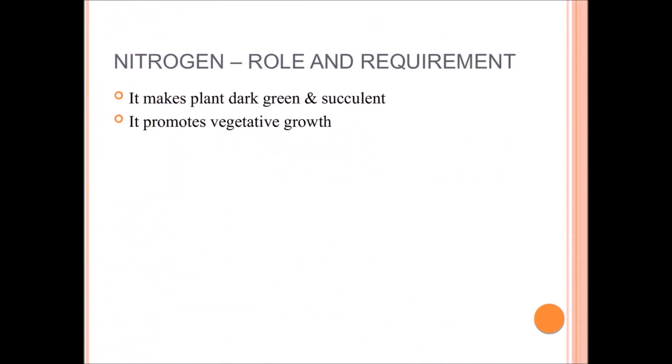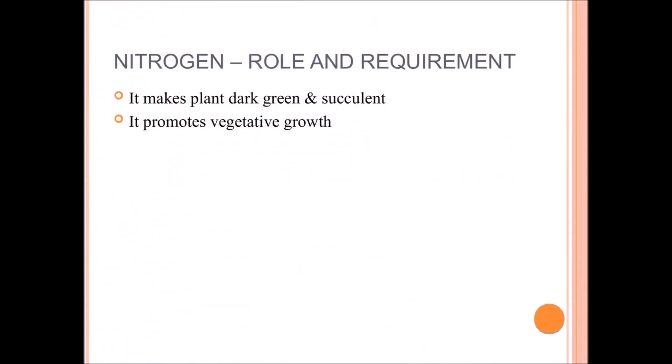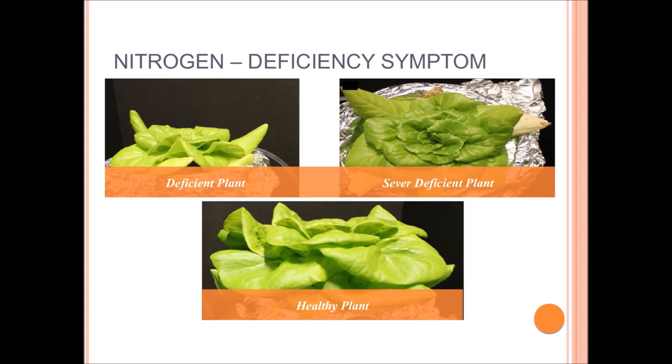There are 16 nutrients essential for plant growth. Nitrogen is one of them, and its role is to promote vegetative growth, promote succulency, and it also attracts a lot of pests. As nitrogen is highly mobile inside the plant, its deficiency symptoms always appear on the lower leaf, and the symptom is uniform chlorosis — where both the veins and the interveinal part become chlorotic.